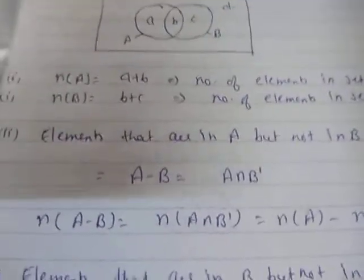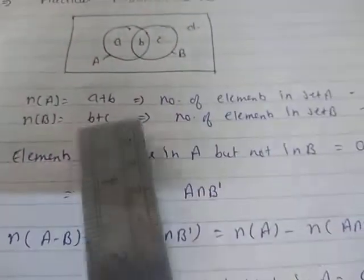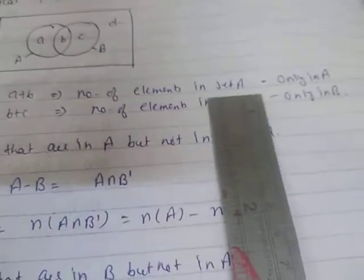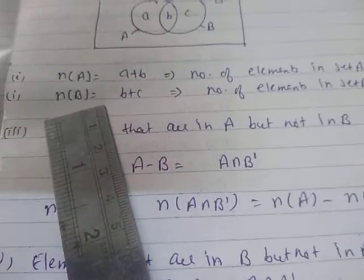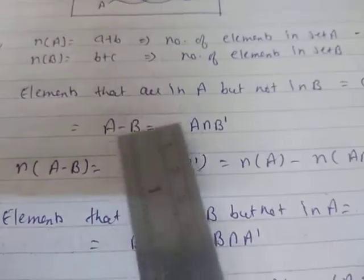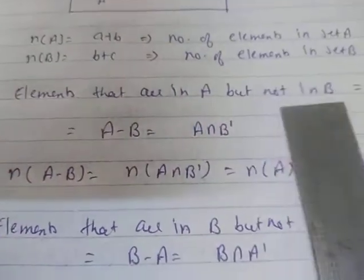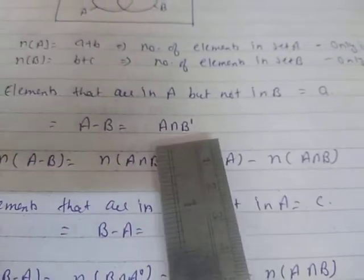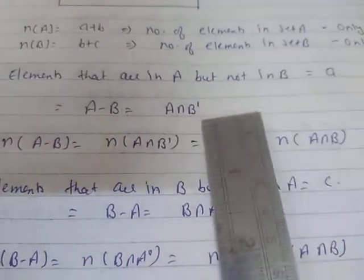To summarize: n(A) = a + b, which is the number of elements in set A. n(B) = b + c. Elements that are present in A but not in B is represented as a - b, which can also be written in intersection form as A ∩ B complement.